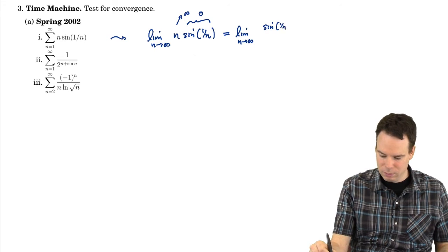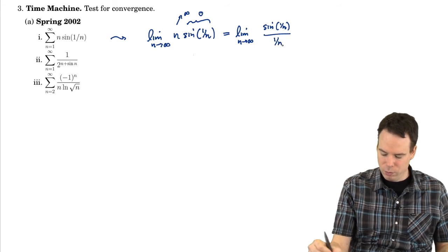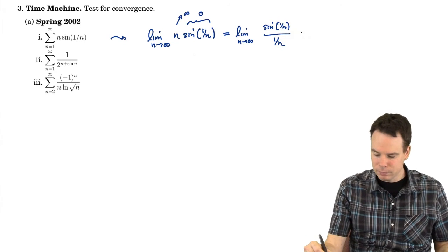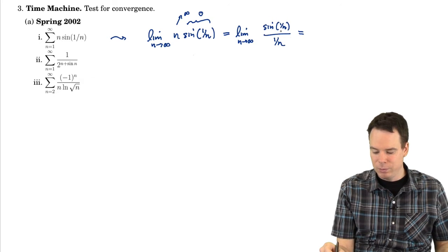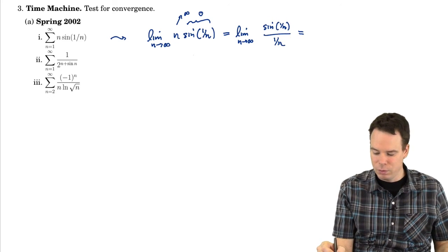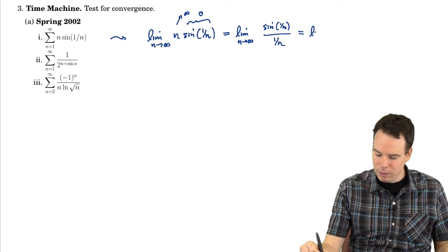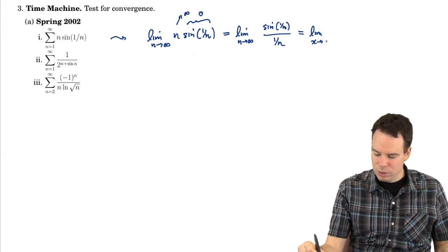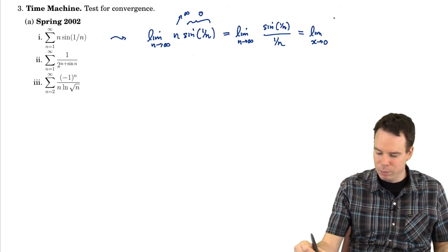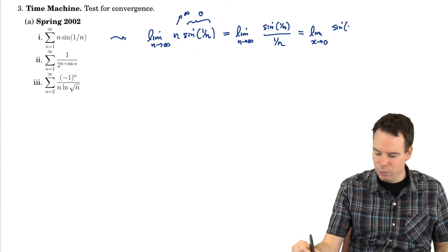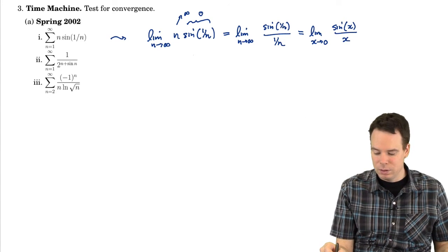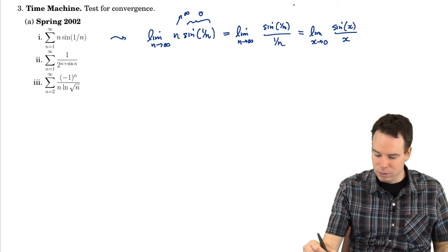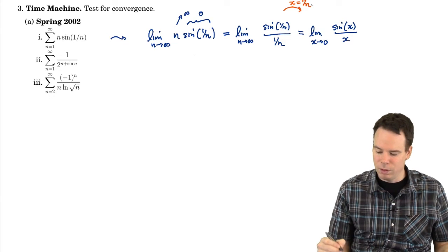It's a zero times infinity type limit. So the best thing to do is write it as a ratio. I'm going to keep the sine upstairs, move the n downstairs as 1 over n. Now it's type 0 over 0. So we could apply L'Hôpital's rule in this case. Another way to think about this though is we could just switch the variable. I'm going to replace that 1 over n with an x in both cases.